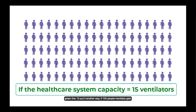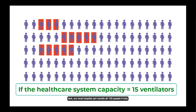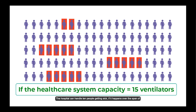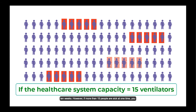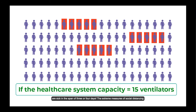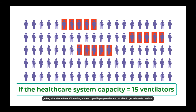To put it another way, if 100 people inevitably get sick, our local hospital can handle all 100 people if only 5 people are getting sick each week over the span of 20 weeks. The hospital can handle 10 people getting sick if it happens over the span of 10 weeks. However, if more than 15 people are sick at one time, you go over capacity. What we really don't want is when suddenly 100 people are sick in the span of 3 or 4 days. The extreme measures of social distancing and self-quarantine are intended to keep hospitals at or below maximum capacity. You can do that by taking precautions to keep people from getting sick at one time — otherwise you end up with people who are not able to get adequate medical care at the most crucial time when they need it.